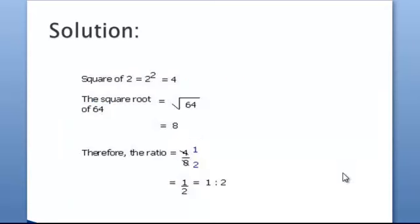The square of 2 equals 2 to the power of 2, which gives us 4. The square root of 64, which is one number that when multiplied by itself gives 64, is 8.